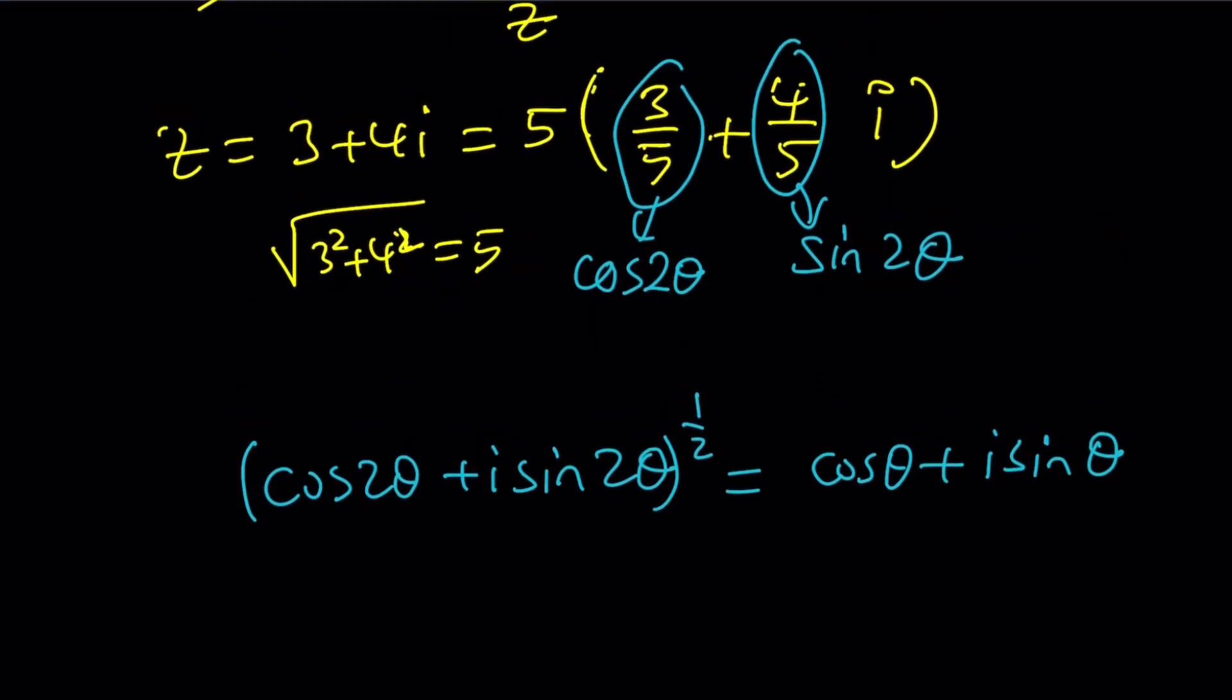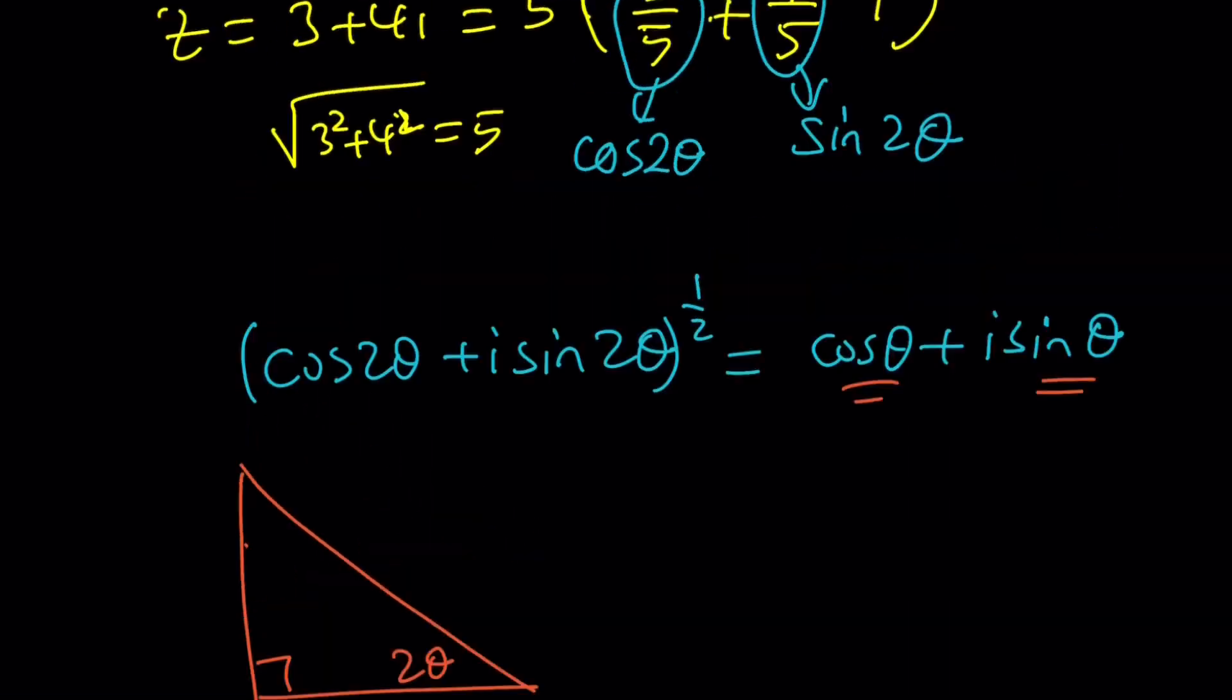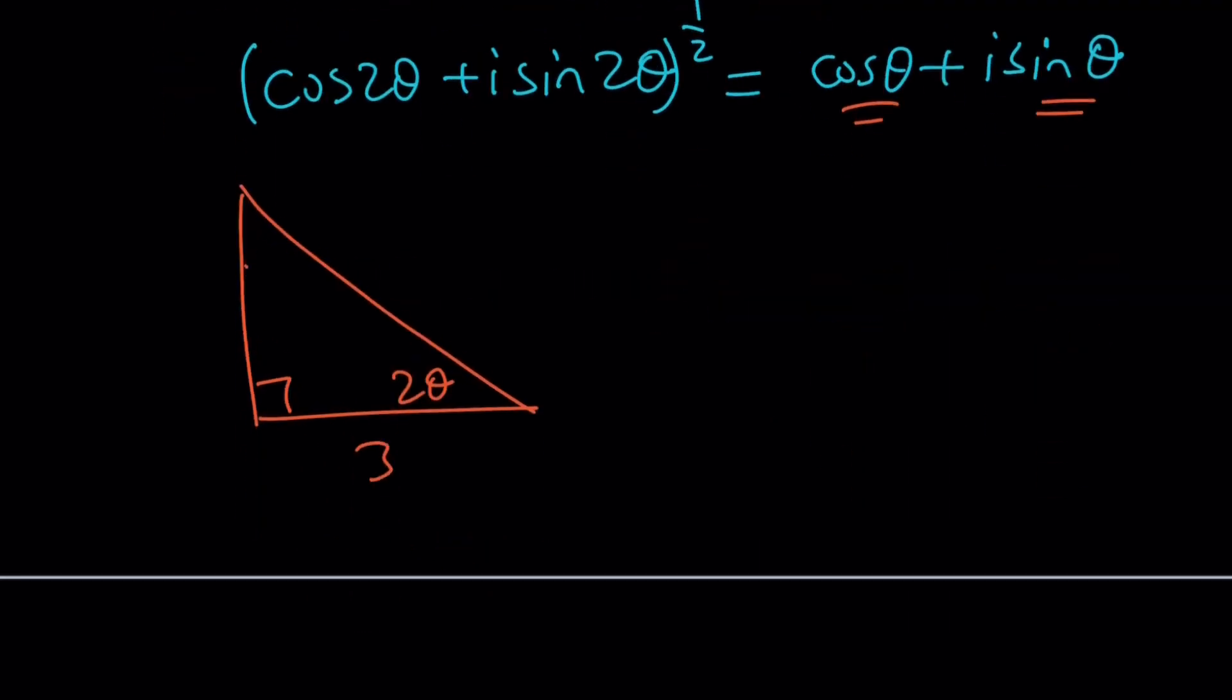So the question is, the million dollar question, can I find the cosine theta and sine theta? And the answer is a big yes. Here we go. This is the fun part because it's a little bit of triangle manipulation. This is 2 theta and cosine 2 theta is 3 over 5. So this is 3 over 5 and this is 4 over 5. Now here's what I'm going to do. This is the coolest part. Extend the base as long as the hypotenuse, which is 5, and connect. You get an isosceles triangle whose exterior angle measures 2 theta. So this must be theta and this must be theta.